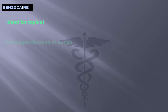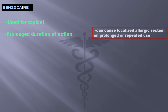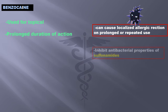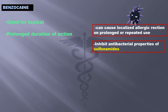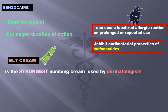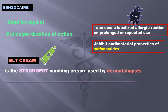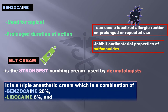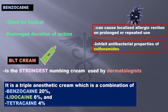Next we have benzocaine. Used topically, it has a prolonged duration of action. On the negative side, it can cause localized allergic reactions on prolonged or repeated use and also inhibits the antibacterial properties of sulfonamides. There is a cream called the BLT cream — the strongest numbing cream used by dermatologists. It is a triple anesthetic cream combining 20% benzocaine, 6% lidocaine, and 4% tetracaine.